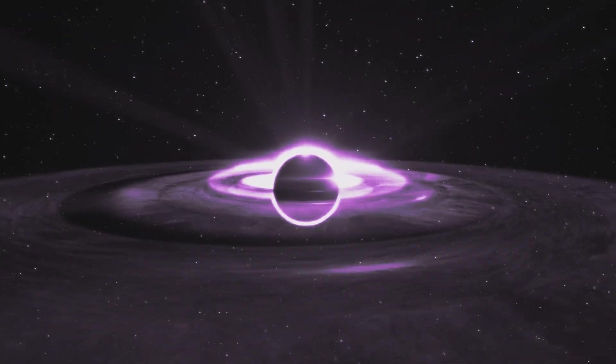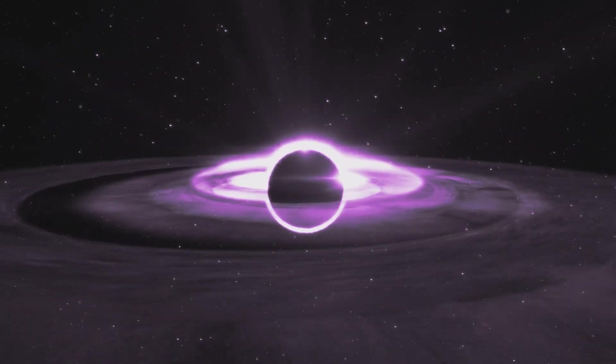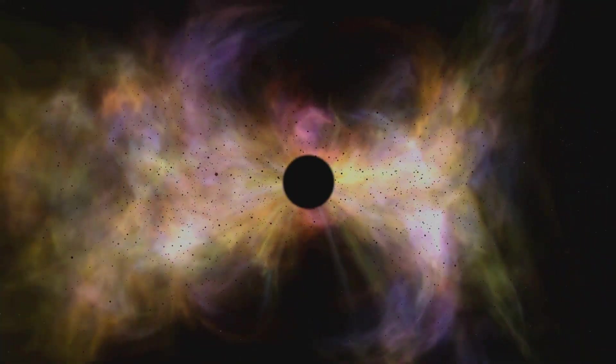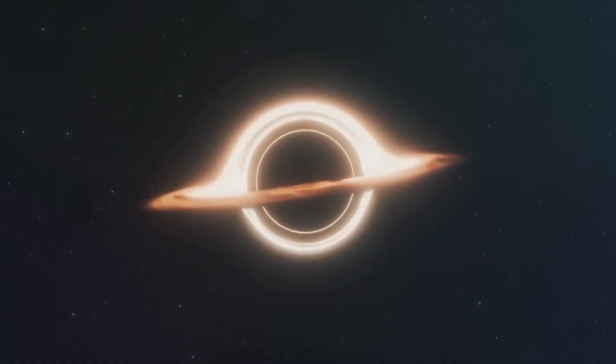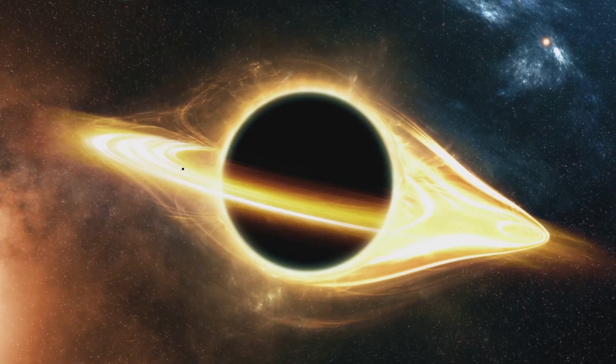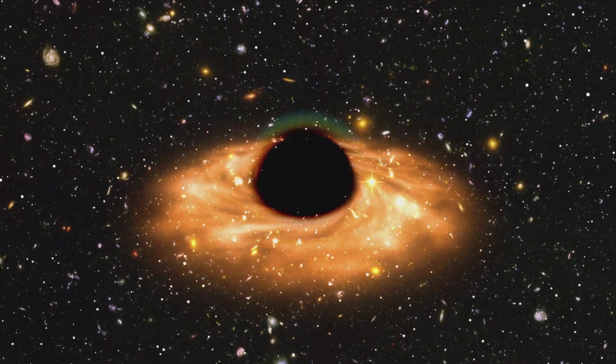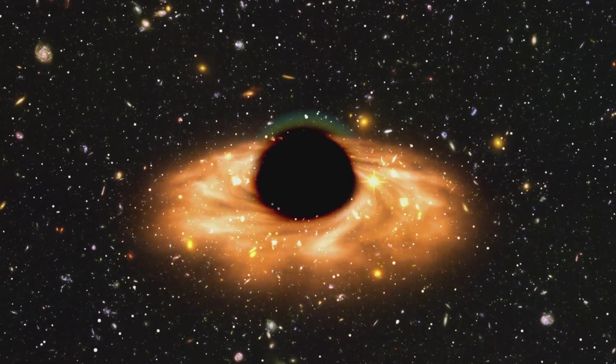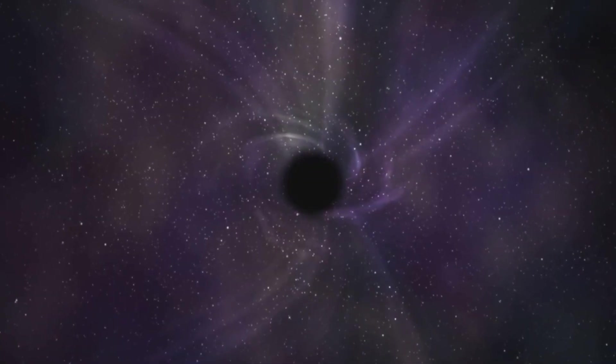The second idea, the heavy seed or direct collapse model, suggests a huge gas cloud collapses directly into a massive black hole, skipping the star stage. This heavy seed would already be thousands of times the sun's mass, allowing it to grow rapidly.